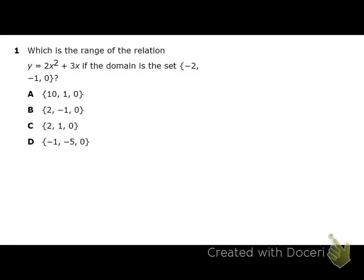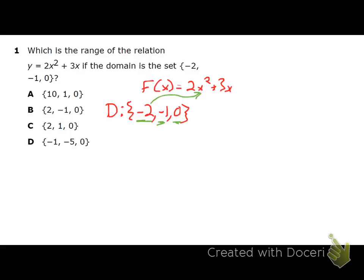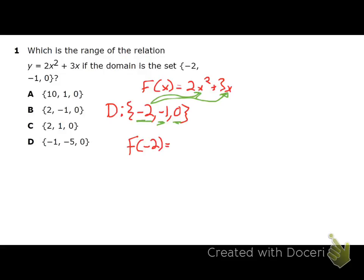This is our last question. It asks: what is the range of the relation if the domain is those numbers? We have the function F of X equals 2X squared plus 3X, and the domain is {negative 2, negative 1, 0}. These domain values are X values. I'm going to take negative 2 and substitute it in for X and work it out — my answer is going to be the first element of my range. Then I'll do the same thing with negative 1 and 0. Those three answers will make up the three values in my range. For example, putting negative 2 into the function: